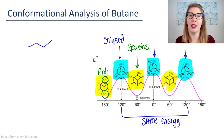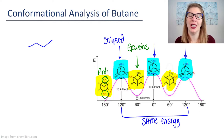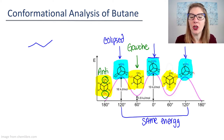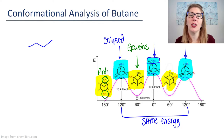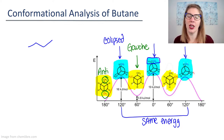The middle eclipsed conformation is higher in energy because you have the two biggest groups lined up with one another. This creates a form of steric hindrance where the CH3s are simply too close together, which increases the conformation's energy.